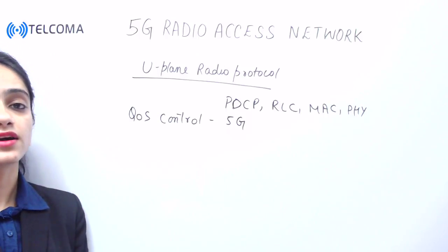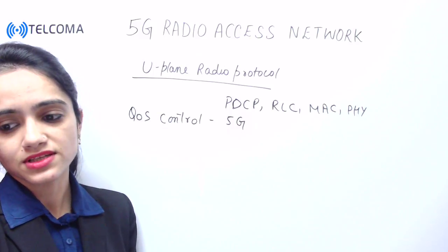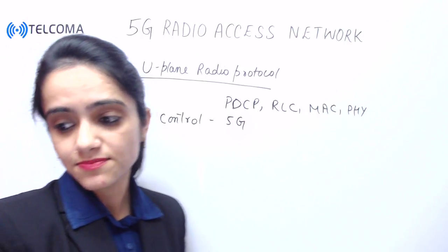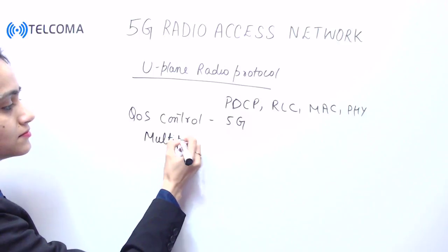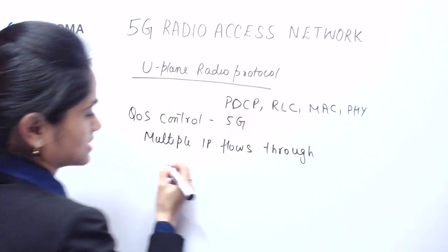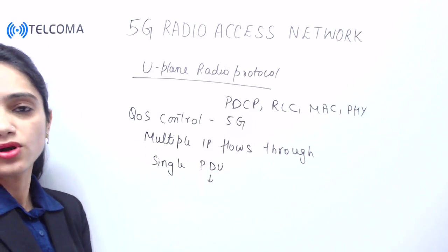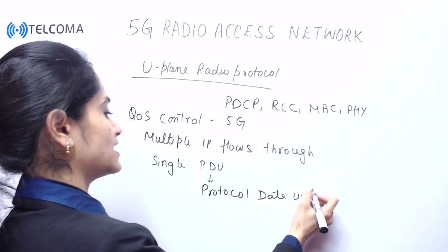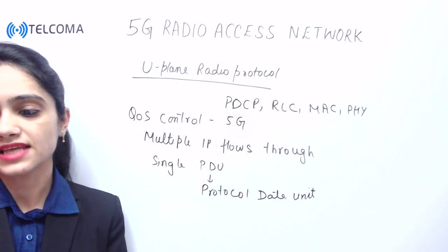In 5G we are focusing on quality of service control, which means we require more flexible and fine-grained QoS control. This flexible and fine QoS control enables multiple IP flows through a single Protocol Data Unit (PDU). So here we can have multiple IP flows through a single PDU session.